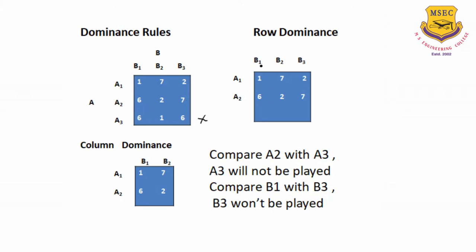That means we will have only A1 and A2 as the two rows. Now we have columns B1, B2, B3. Here we compare what are the maximum losses that B is going to incur. If we compare B1 with B3: the payoffs are 2 and 1, so there is more loss here; and 7 and 6, so 7 is more. That means if B is playing B3 the losses are more, so he does not play B3 and cancels that column. So A will play only A1 and A2 strategies, and B will play only B1 and B2 strategies. Using row dominance and column dominance, we reduce the matrix into a 2x2 matrix.